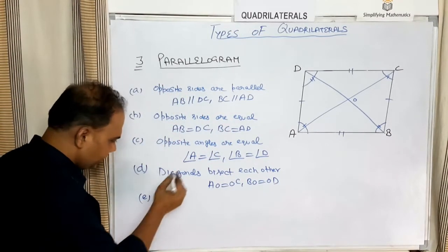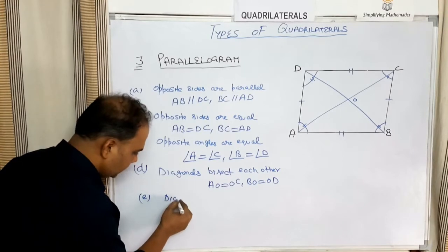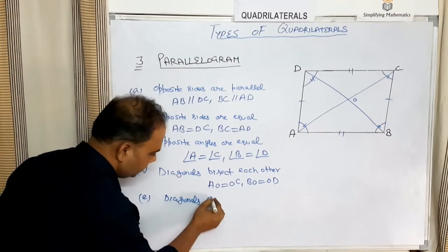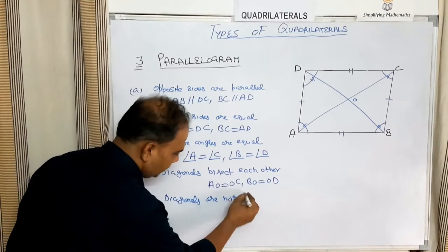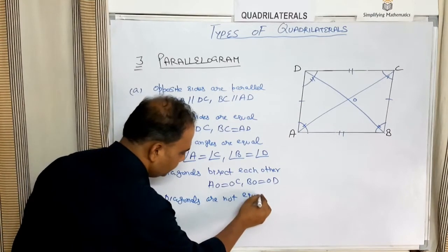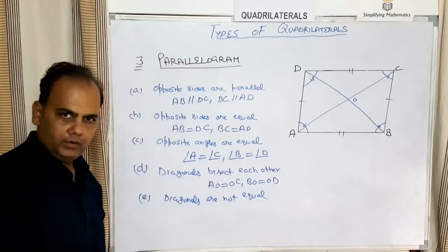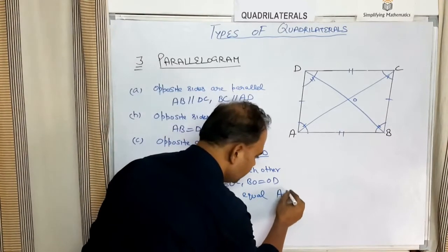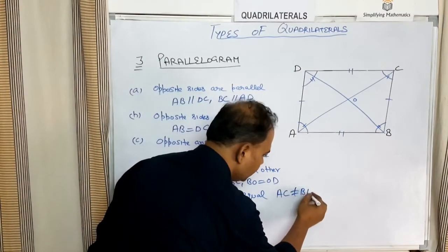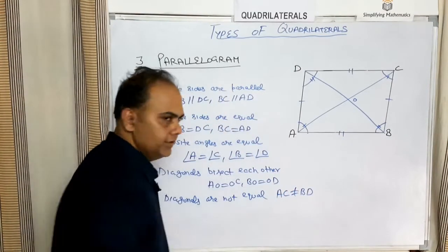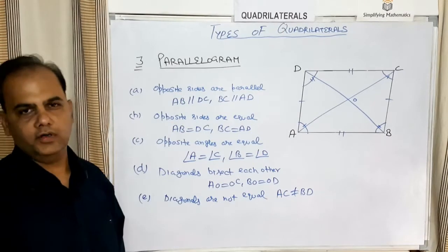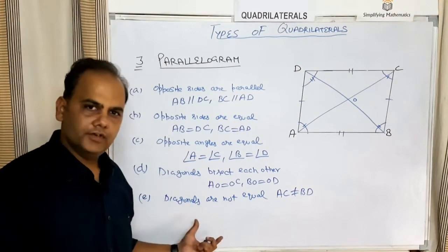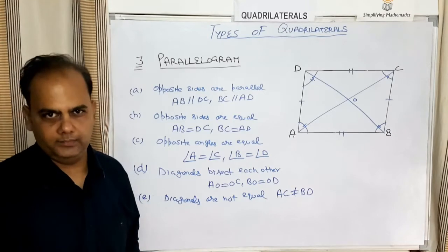One more property of a parallelogram is that the diagonals are not equal — AC is not equal to BD. These are the five properties of a parallelogram.